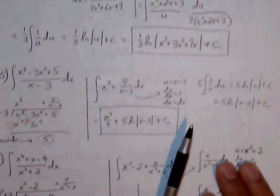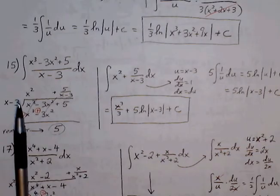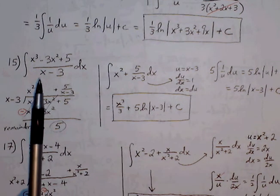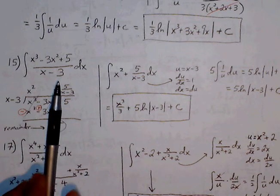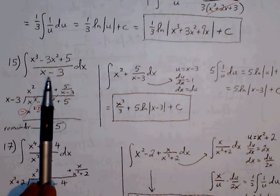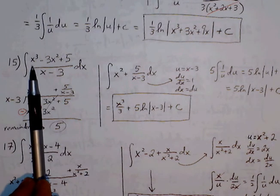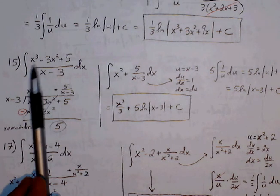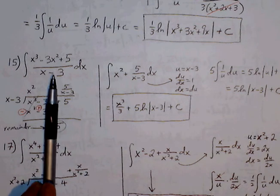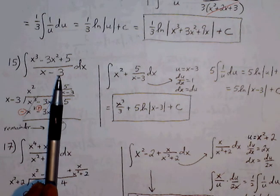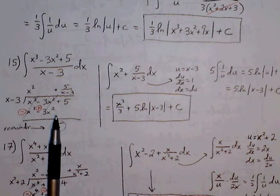Number 15. We can't go through power rule alone. Thinking about u substitution — if we let the denominator be u, the derivative will not be enough to cancel out the numerator; if we let the numerator be u, the derivative will not cancel out the denominator. So we have to think about how to rewrite this in a different form, and we look at going through long division.